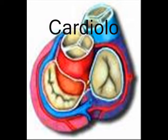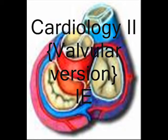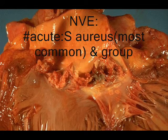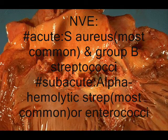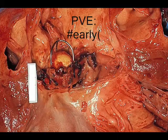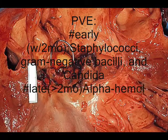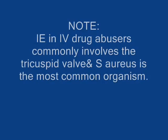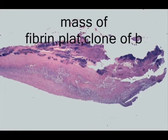We're going to start with cardiology and the valvular version, beginning with infective endocarditis. This may affect a native valve acutely, where Staph aureus is most common, or subacutely, where alpha-hemolytic Streptococcus is most common. It may also affect a prosthetic valve early, where Staph is most common, or late, where alpha-hemolytic Streptococcus is most common. In IV drug abusers, it affects the right side and Staph aureus is the most common organism.